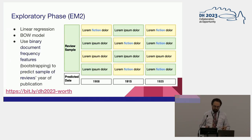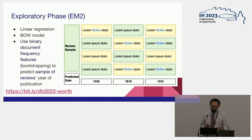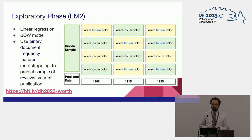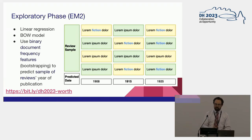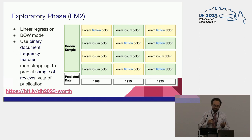The second model was also a bag-of-words model, but I bootstrapped small samples of collections of book reviews and looked for how many of them contained a term. This controls for one review that has many, many references to the same word. It looks for whether a word spreads in diffusion over time or shrinks, discovering terms like fiction as predictors of a later date based on document frequency.